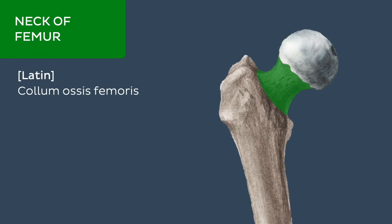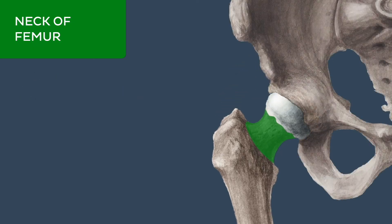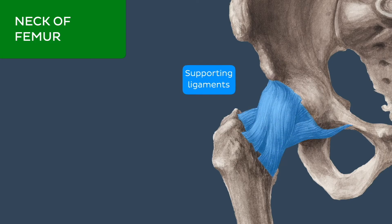The neck of the femur is distal to and continuous with the head of the femur. The neck of the femur connects the head with the body and is primarily covered by the fibrous joint capsule of the hip joint and its supporting ligaments.